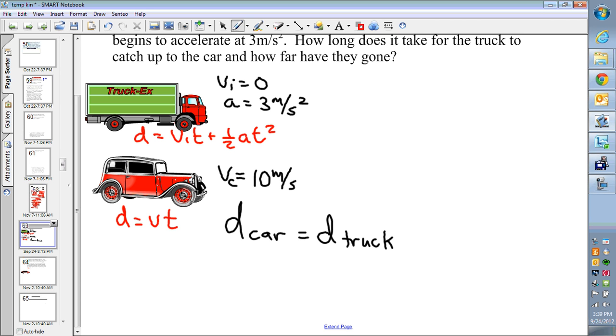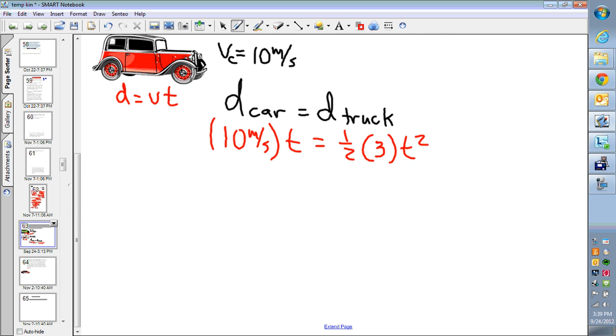So the distance for my car is 10 meters per second times the time, which I'm going to leave as a T. The distance for my truck, VI is zero, so it's just 1 half AT squared. So my formula is 10T equals 1.5T squared. Now this is one of the first examples I did. It's an easy quadratic to solve, but don't cancel. Make it equal to zero. 1.5T squared minus 10T.